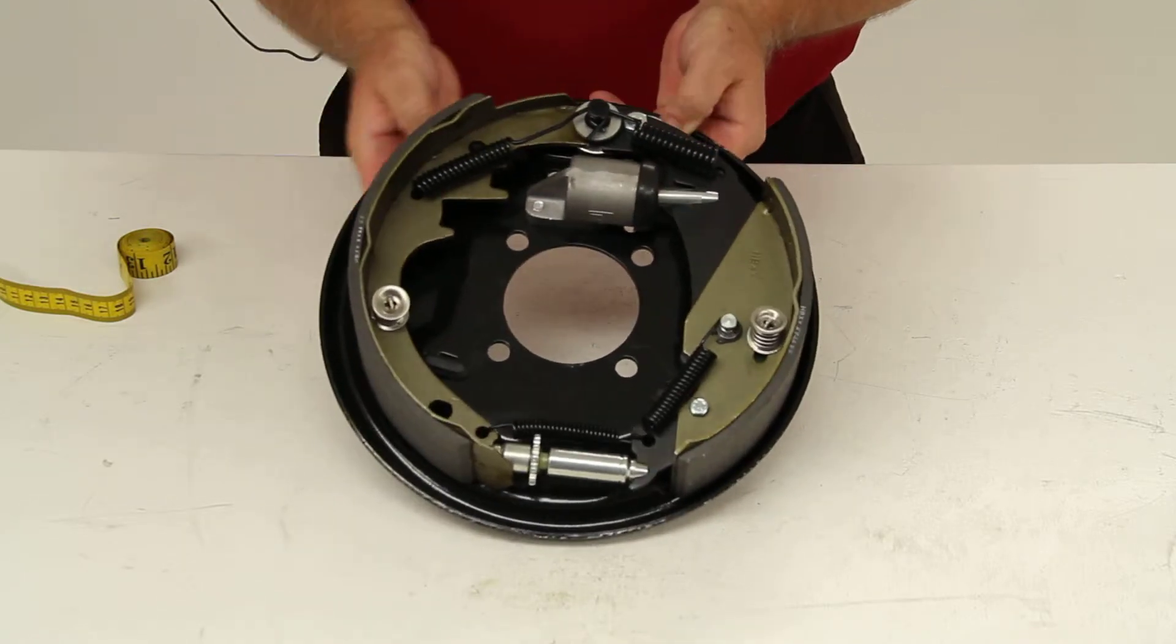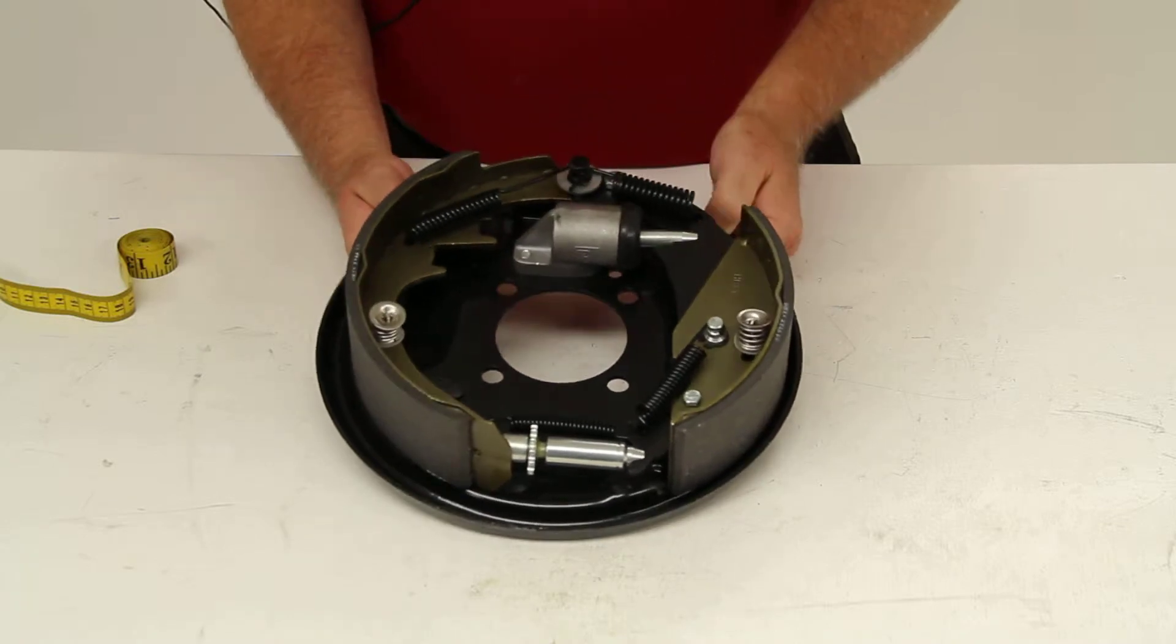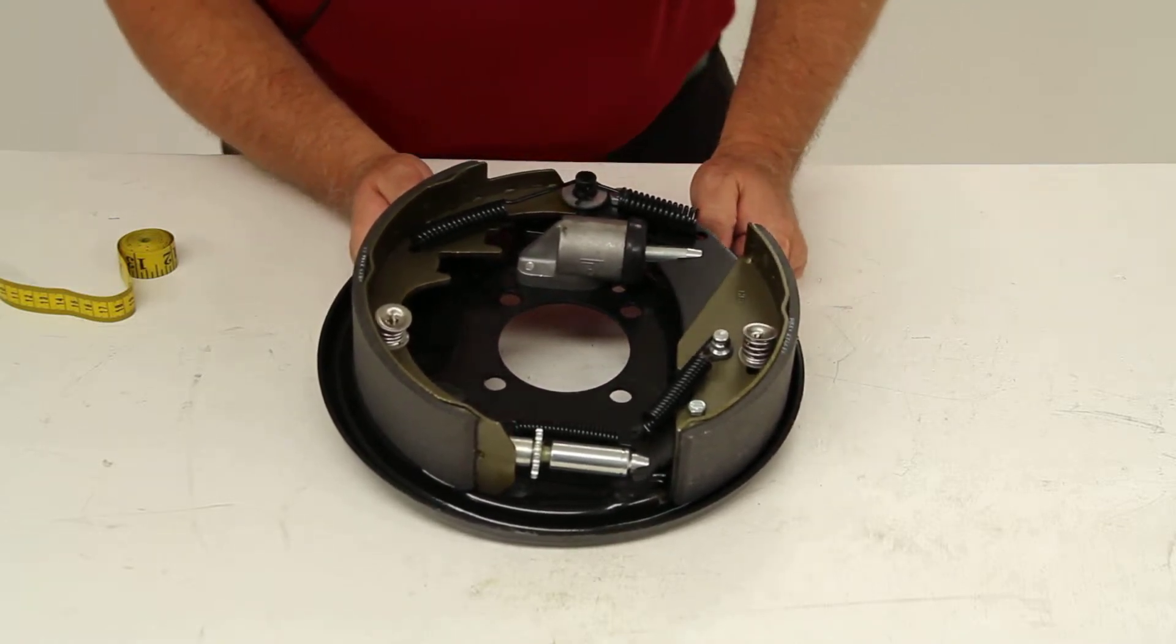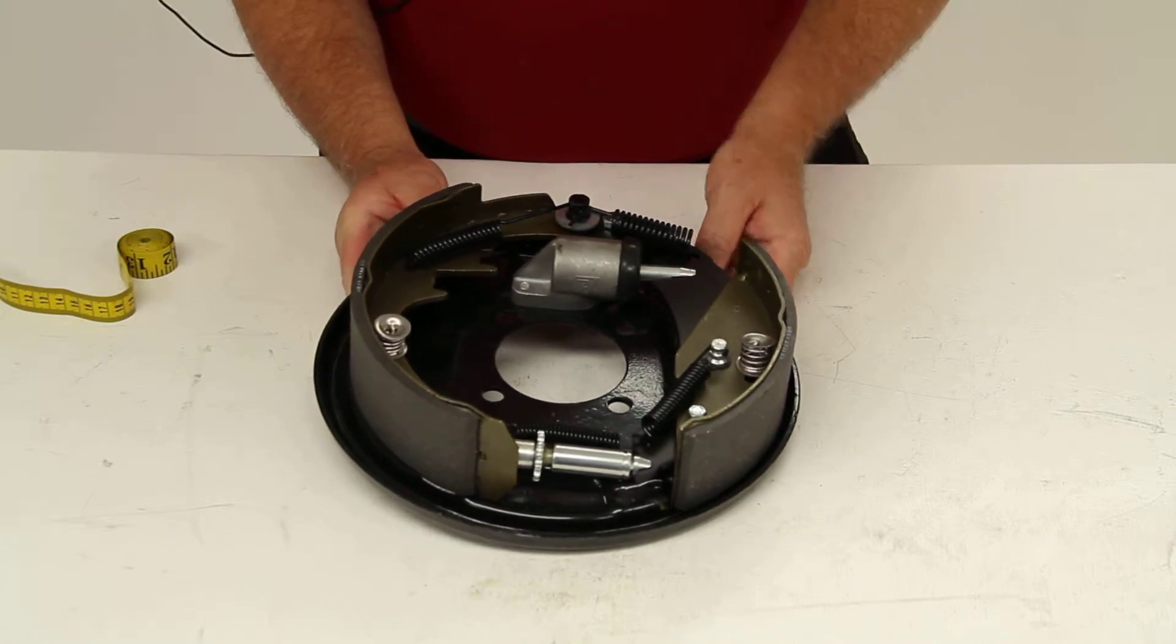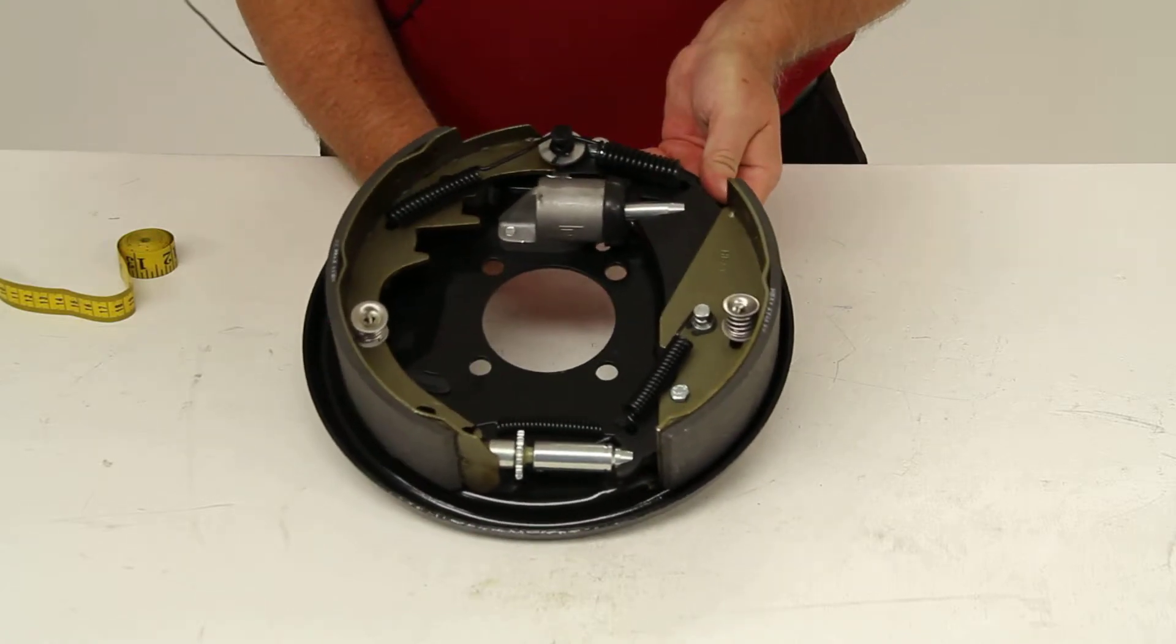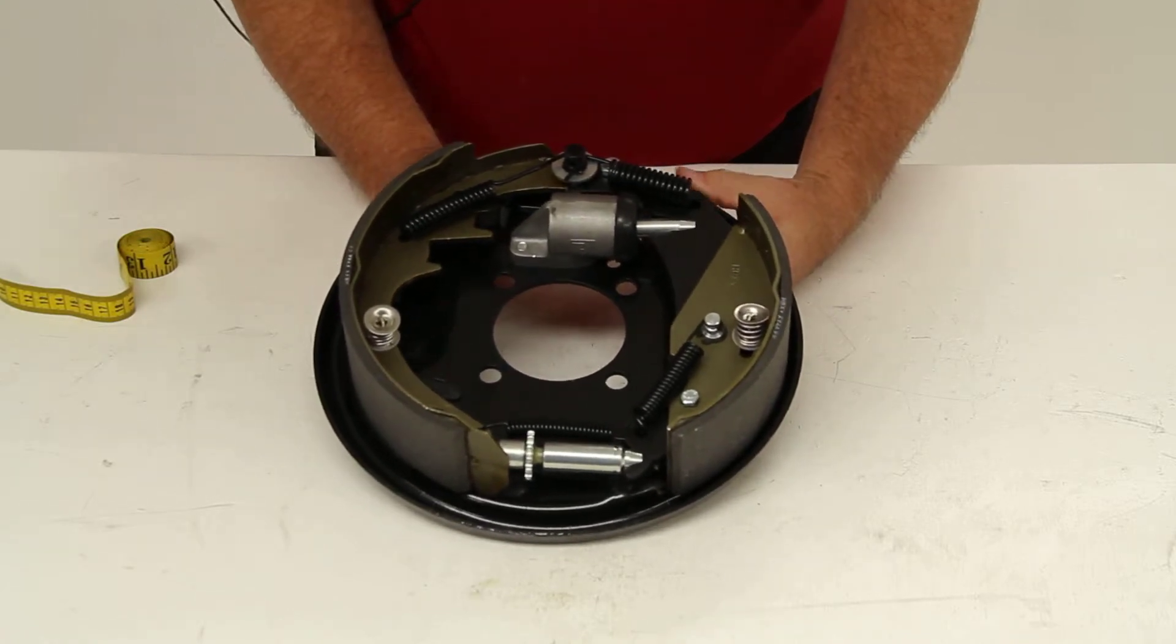This has a black paint finish. As mentioned, this is a free backing design brake assembly, which means it will let your trailer move in reverse without actuating the brakes.